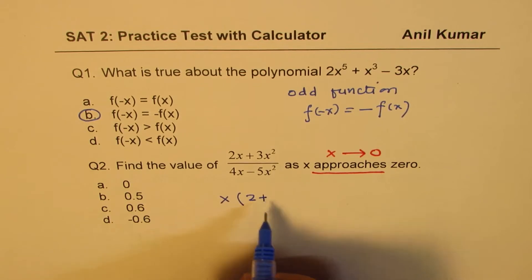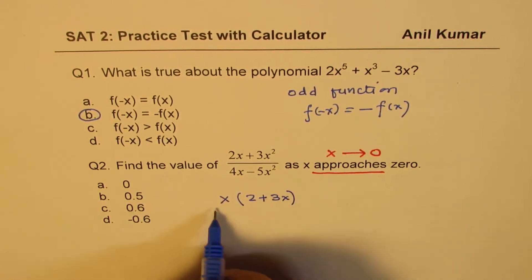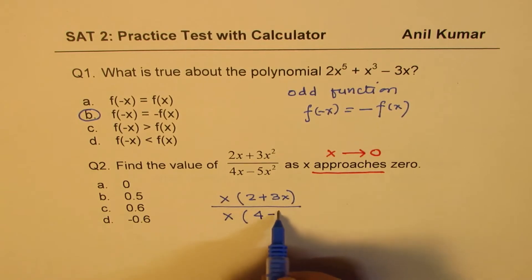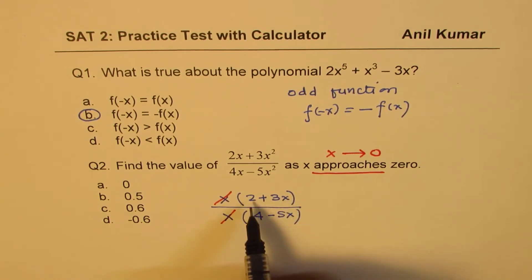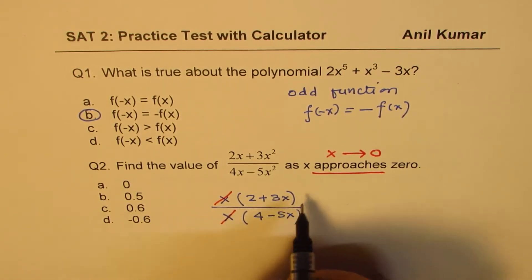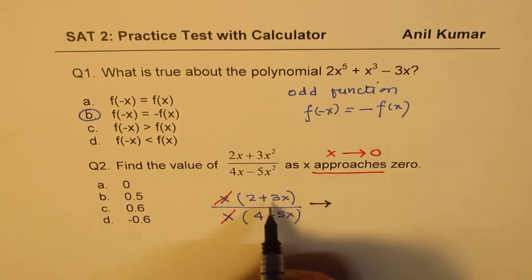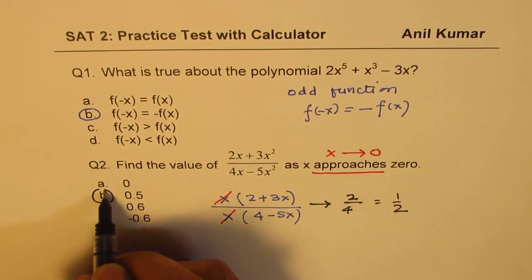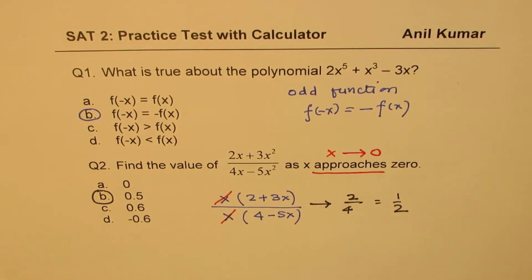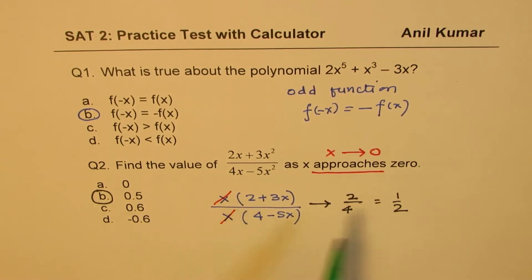After factoring x, the numerator becomes x(2 plus 3x) and the denominator becomes x(4 minus 5x). The x's cancel. Now substituting x as 0, those remaining x-terms approach 0, and we get 2 over 4, which equals 0.5. So 0.5 is the correct option.